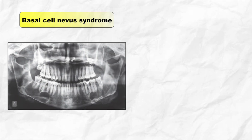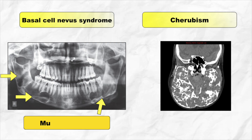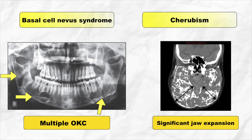If a young patient presents with multiple jaw cysts and there is no significant bony expansion, think about OKC and basal cell nevus syndrome. Basal cell nevus syndrome is associated with multiple odontogenic keratocysts. Look for other features like calcification of the falx cerebri, bifid ribs, and vertebral fusion. Remember, cherubism also presents with bilateral multilocular lesions, but there will be significant bony expansion, as you can see in this image.